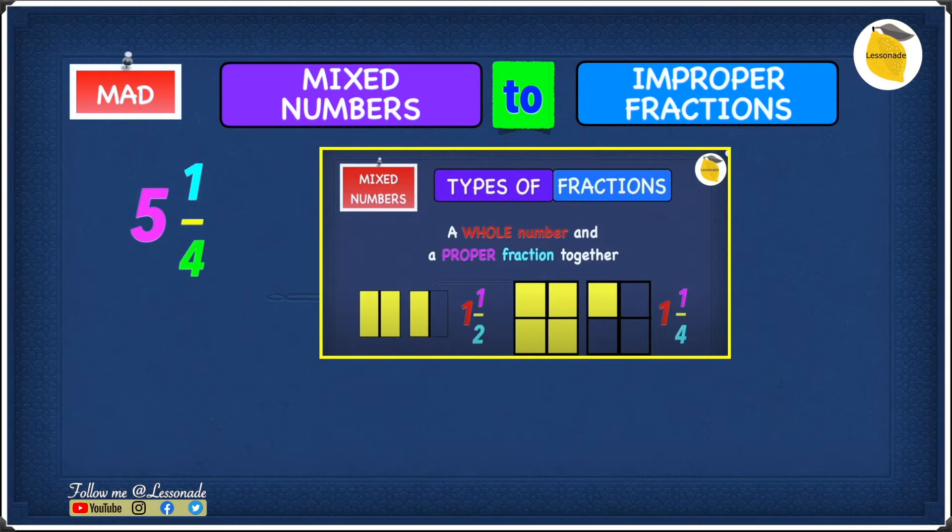To put it quickly, a mixed number is a whole number and a proper fraction combined. The whole number in this case is 5 and the proper fraction is 1 over 4.